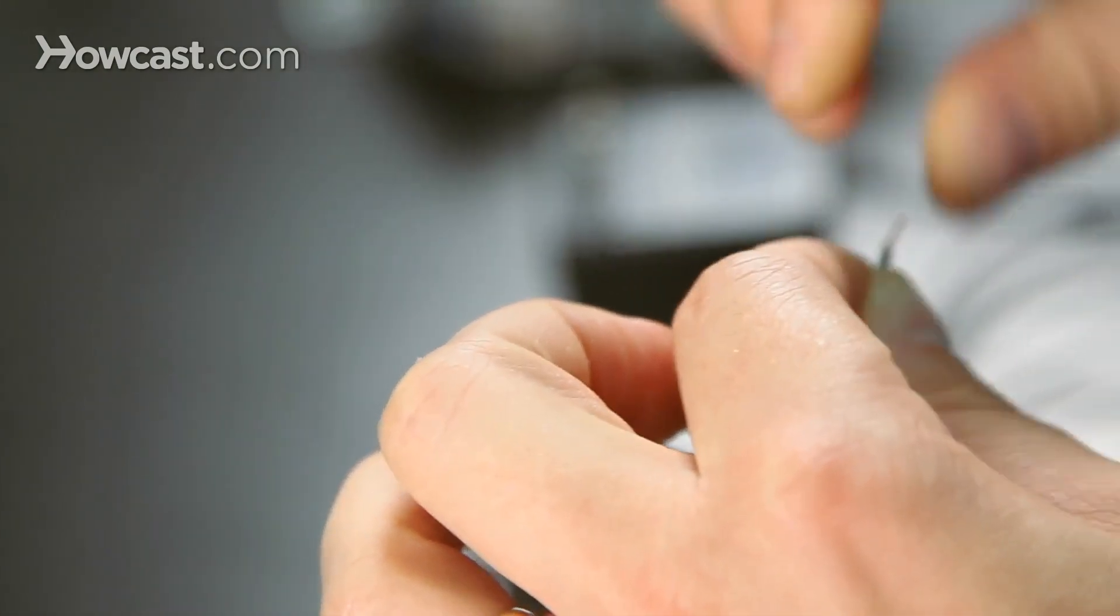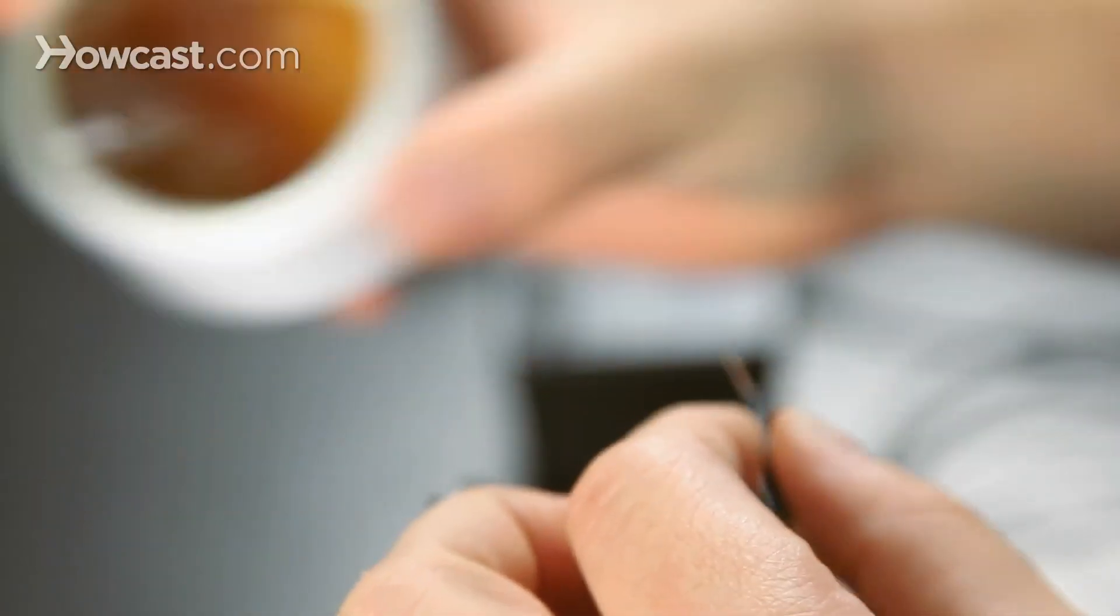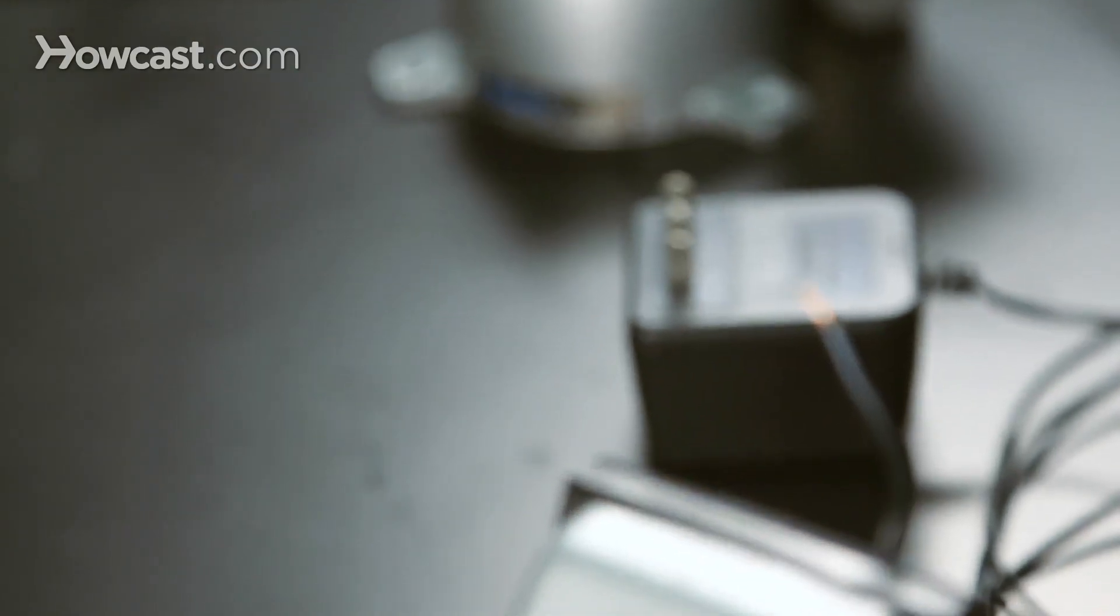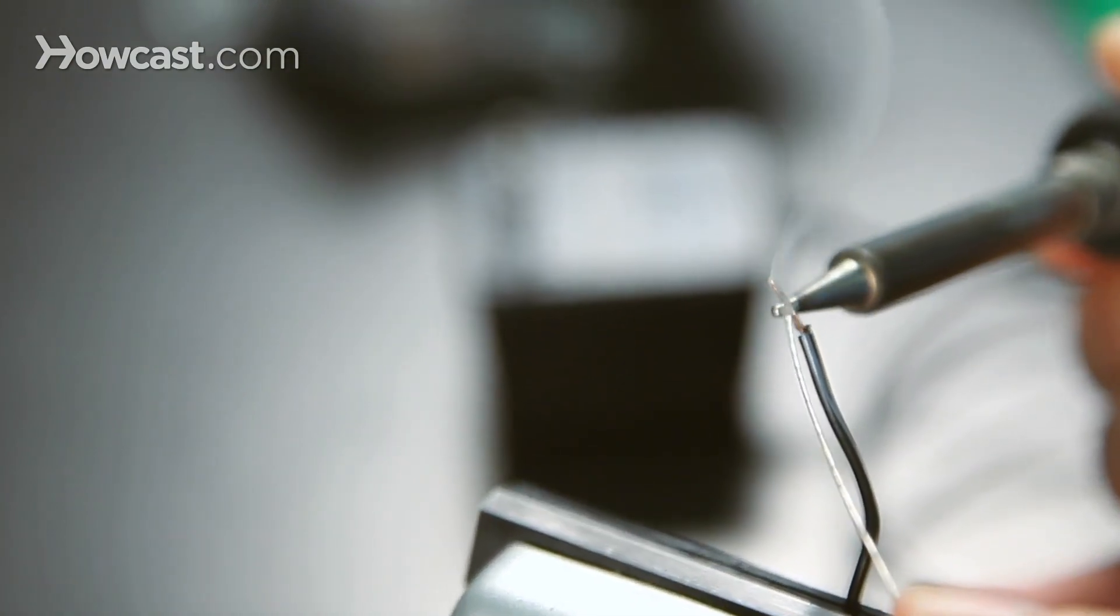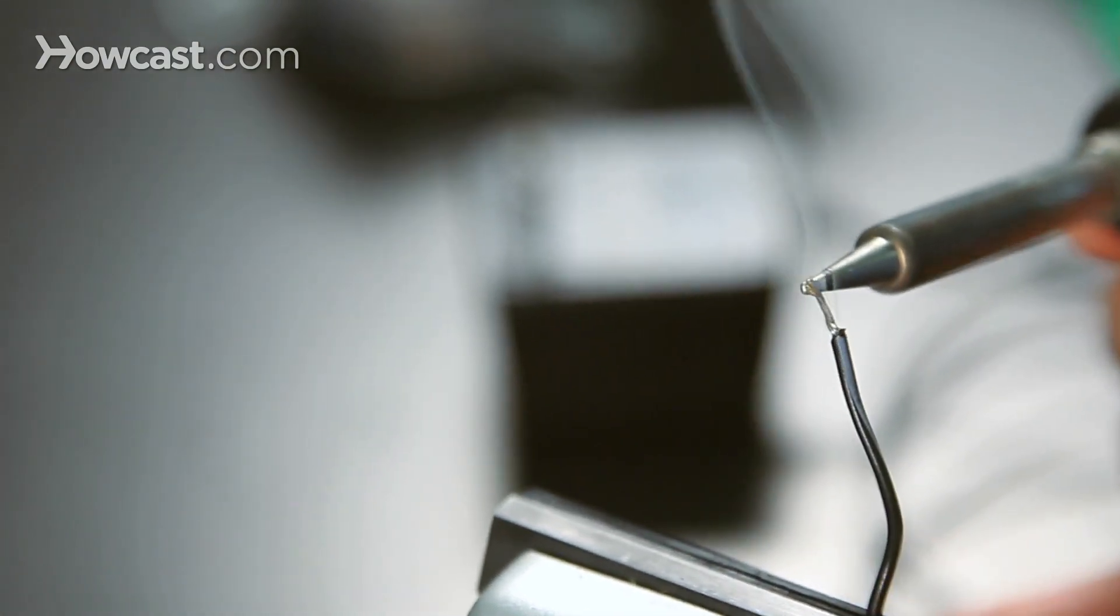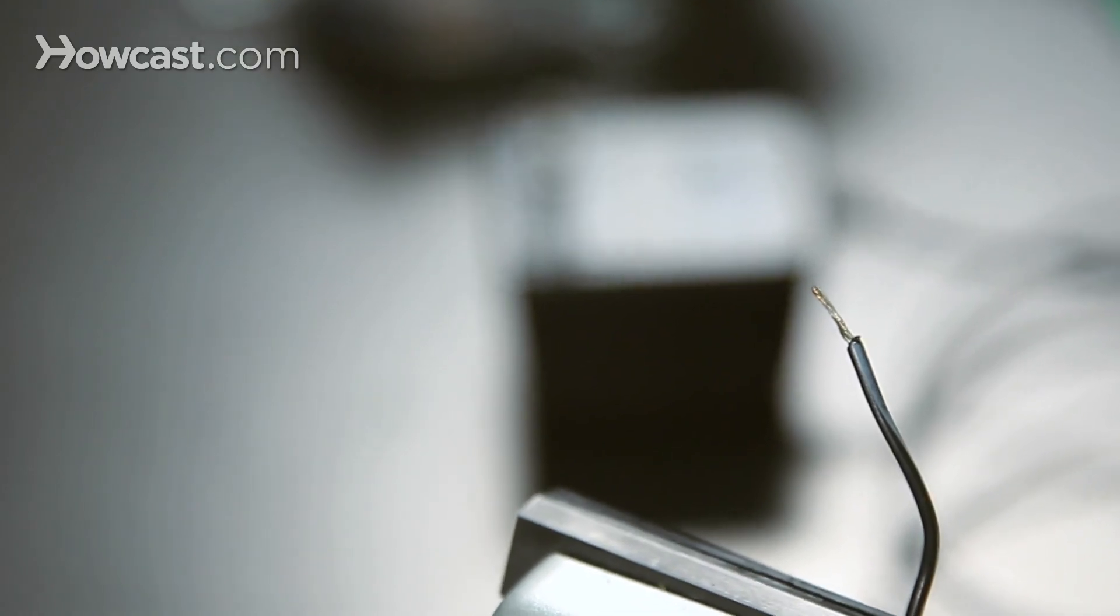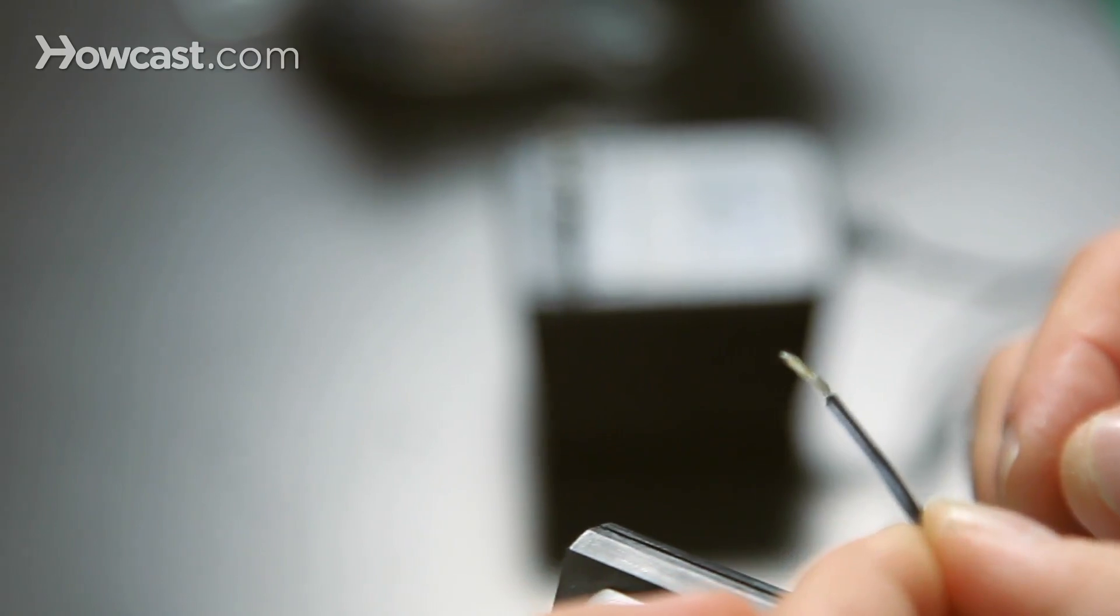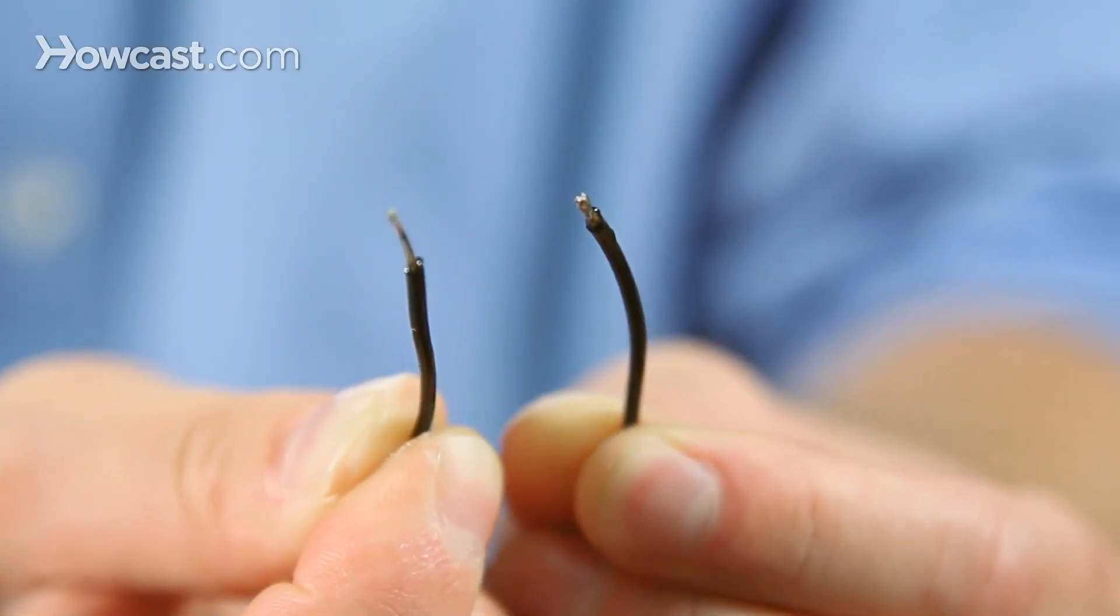Twisting the wire, adding our flux, applying heat, and our solder wicks its way in between the copper wires for a nice, clean, tinned copper wire. There you have it.